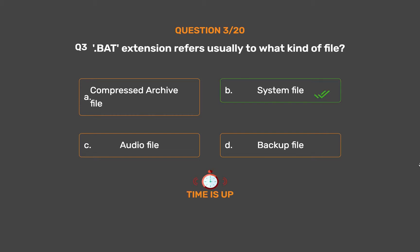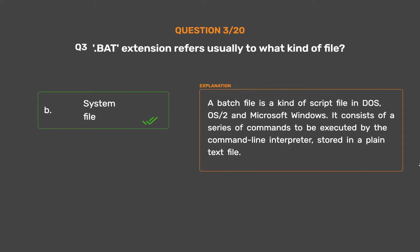The correct answer is Option C. A batch file is a kind of script file in DOS, OS/2, and Microsoft Windows. It consists of a series of commands to be executed by the command line interpreter, stored in a plain text file.